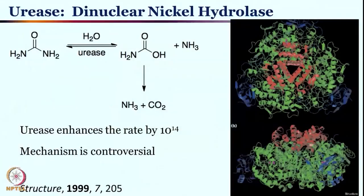Let us look at another enzyme: urease. In the last case we saw urea formation; in this case, urea is converted to ammonia and carbon dioxide. This is also a fascinating enzyme — quite a lot of crystal structures have been reported; it has been well-studied. The mechanism remained controversial, but urease can catalyze this reaction very efficiently; without urease the reaction is very sluggish, but with urease the rate is enhanced by 10 to the 14th fold.